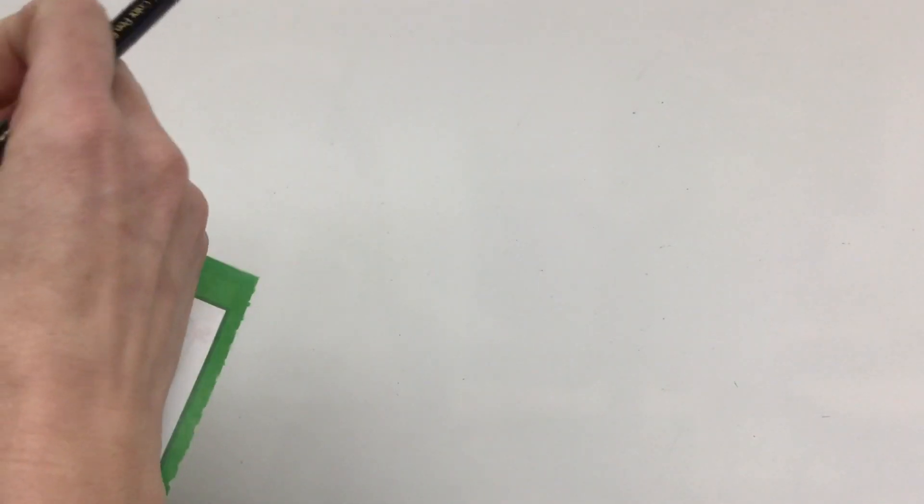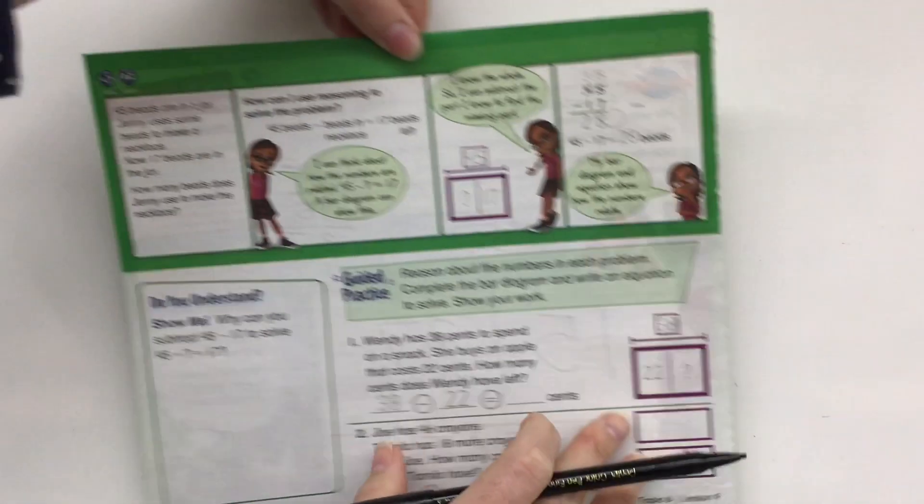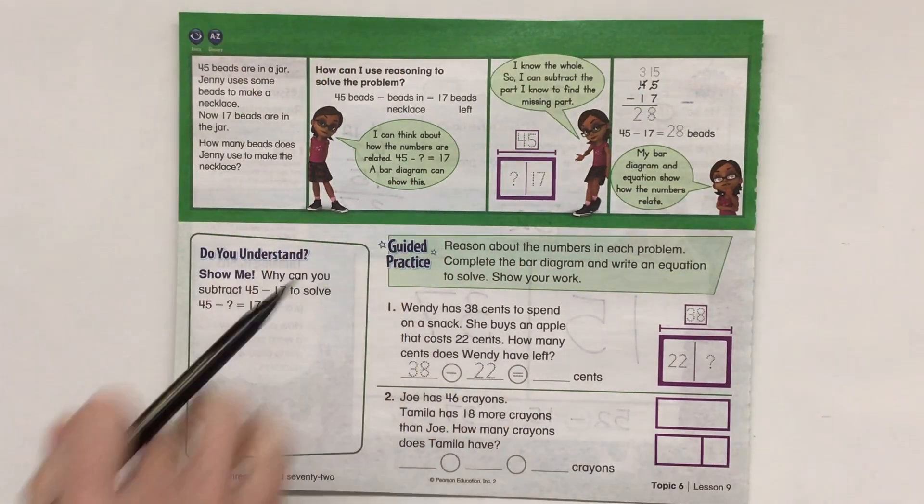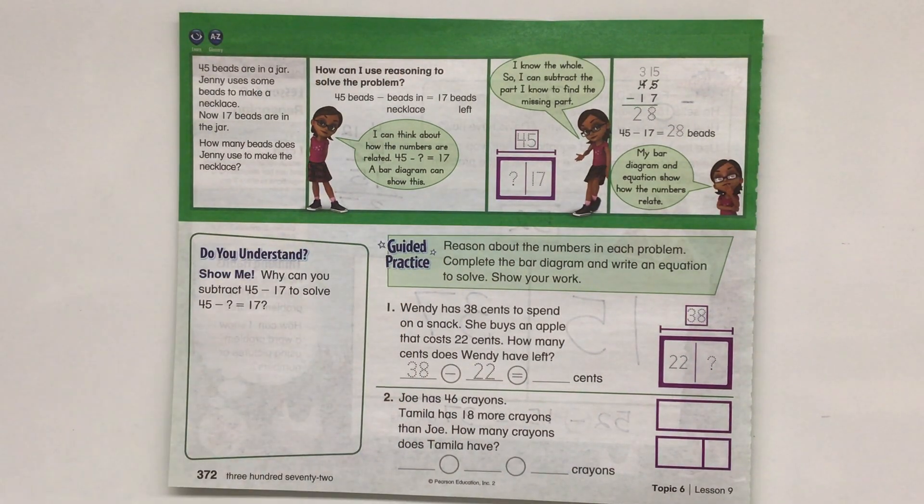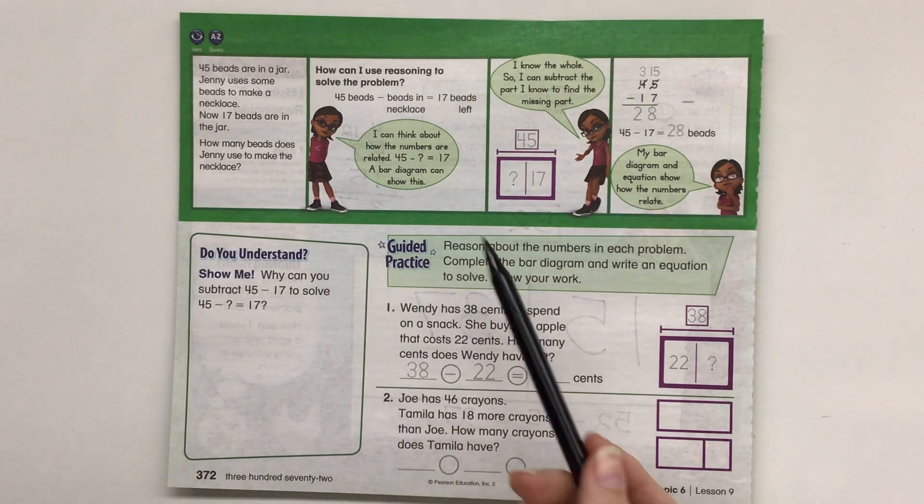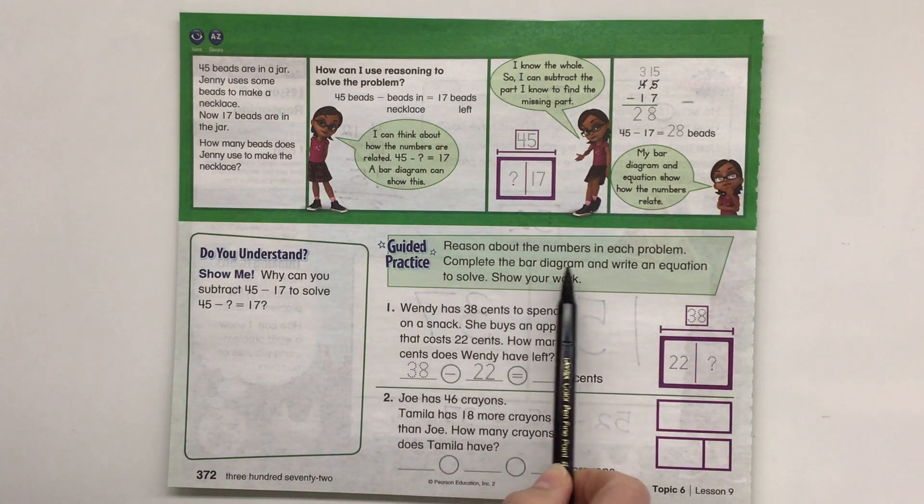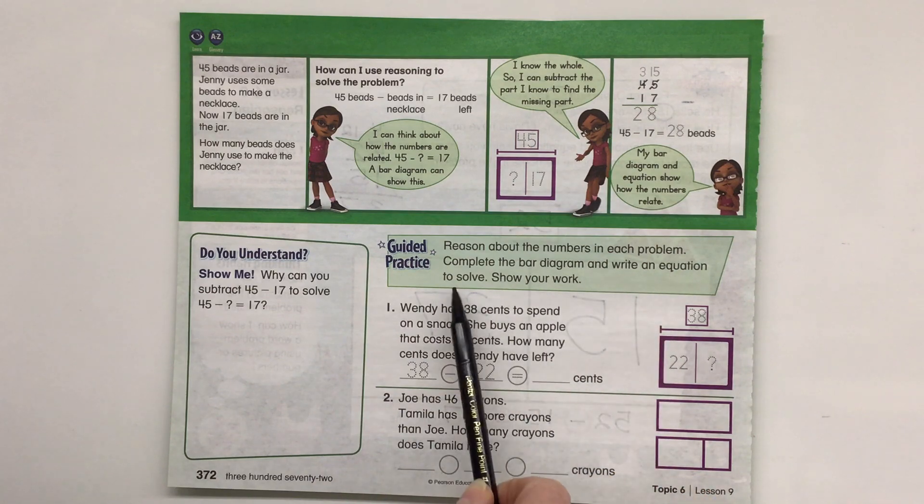All right, let's go ahead and go to our next page here. A lot of this is going to be review. So you can read the comic on your own. We're going to skip the Do You Understand? Show Me? We'll keep that for a class discussion. So let's go through our guided practice. Reason about the numbers in each problem. Complete the bar diagram and write an equation to solve.